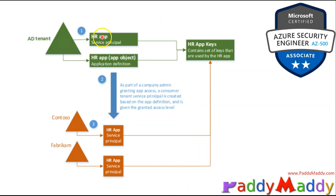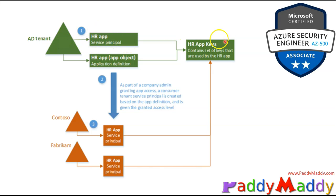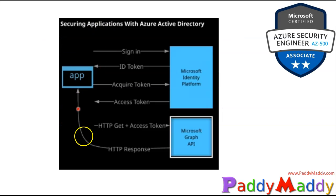Let's take an HR application as an example. When an end user opens this HR application and tries to access it, it goes to the Azure AD tenant, which provides some kind of access control back using secret keys. The application is then visible or granted access for the end user. Let me explain what happens in more detail.